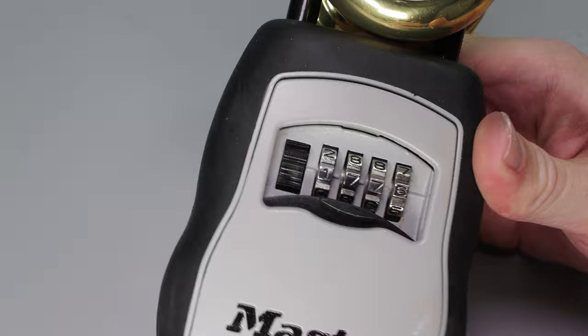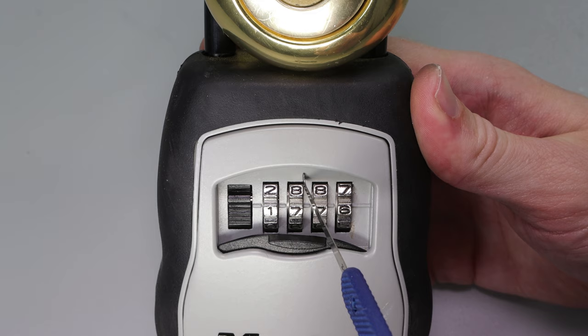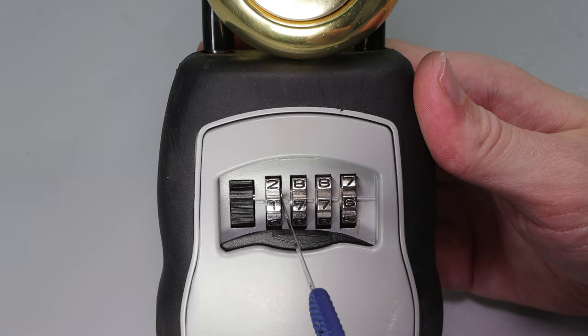So our code right here is 1776. To recap: you want to tension off the second wheel and pull it taut to get the first code. Then you're going to move over to tensioning the first wheel. Then you pull your tension and decode the subsequent wheels.